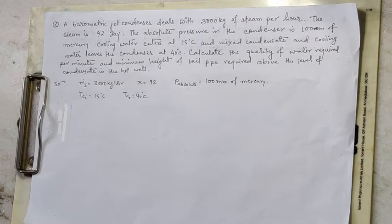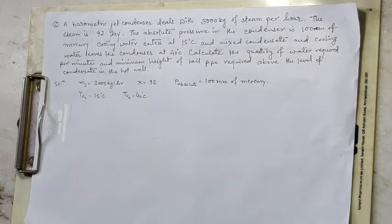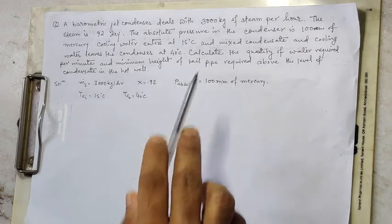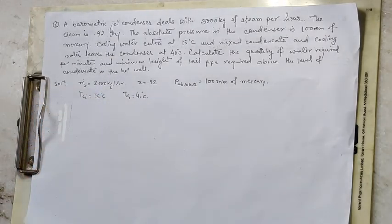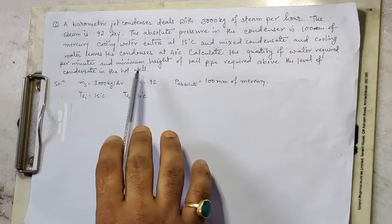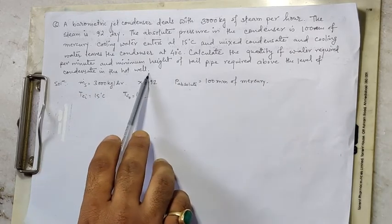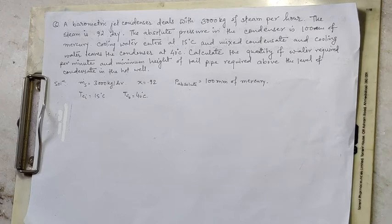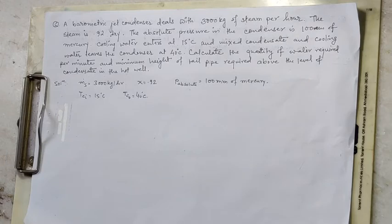We have to calculate the quantity of water required per minute and the minimum height of the tail pipe required above the level of condensate in the hot well. To find the quantity of water required per minute, we use the heat balance equation: heat lost by the steam equals heat gained by the cooling water.